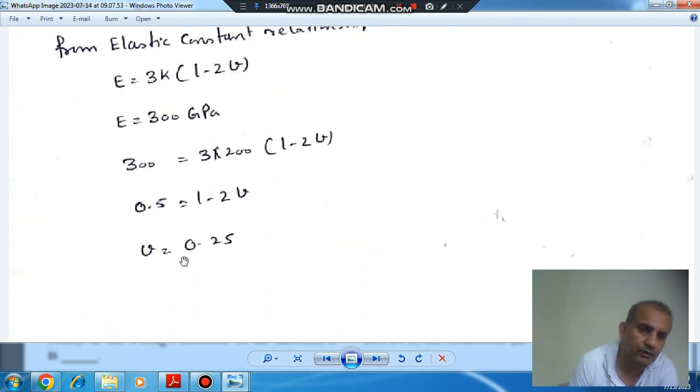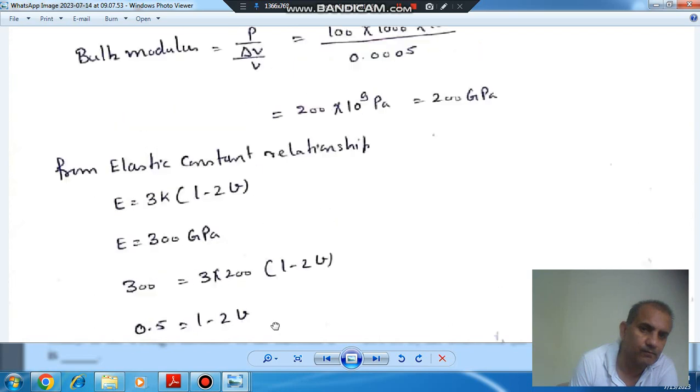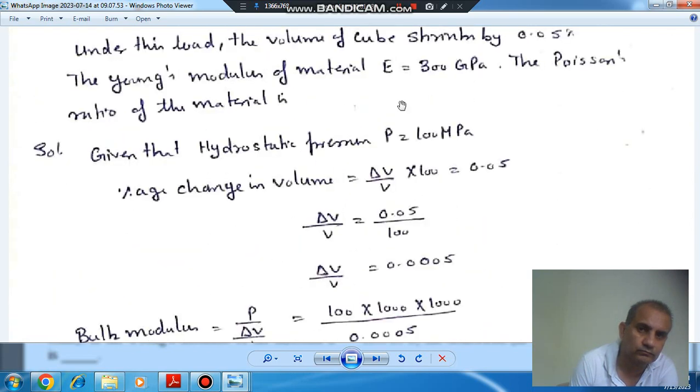So, you can find out the value of Poisson's ratio, which is 0.25.